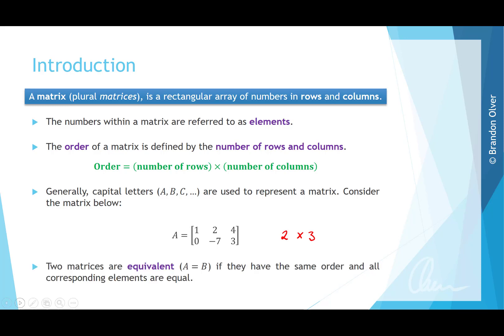For two matrices to be equivalent — so for A to equal B — they have to have the same order and all corresponding elements must be equal.